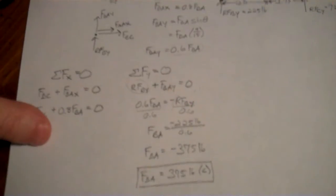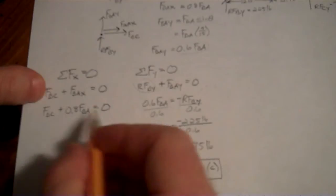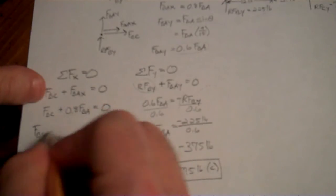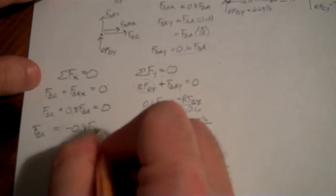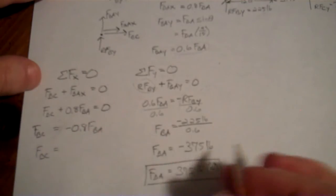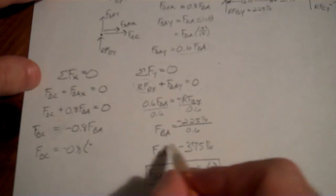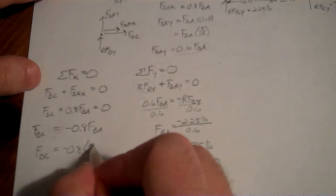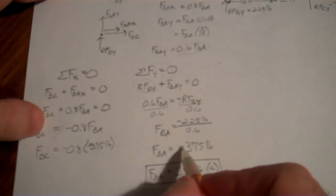All right, that's one of the things we need to find. So if we know FBA, we can work back over here and plug that in for our equation over here. And let's throw that over to the other side. FBC is equal to negative 0.8 FBA, because we subtracted it from both sides. So FBC is equal to negative 0.8 times FBA, which was negative 375. All right, we have to plug in the negative value here, because that mathematically was what represents compression.